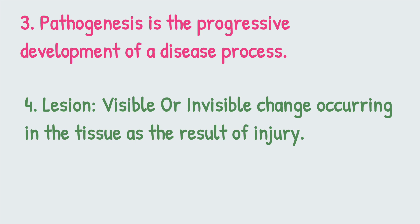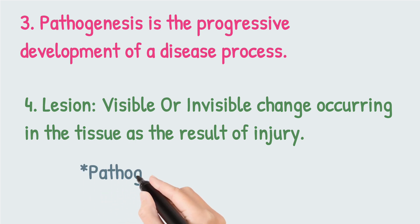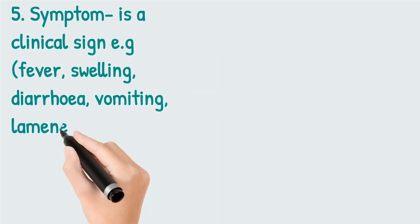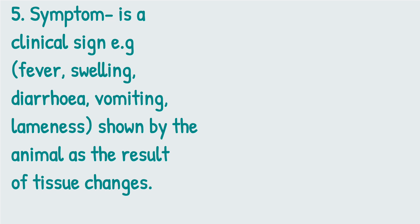Microscopic lesions, on the other hand, require a microscope for you to see them. There are also lesions that indicate particularly the cause of a specific disease — these lesions are called pathognomonic lesions. When you see them, you know that this change is specific to that particular disease.